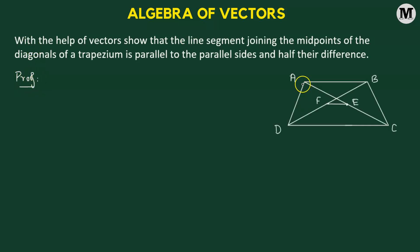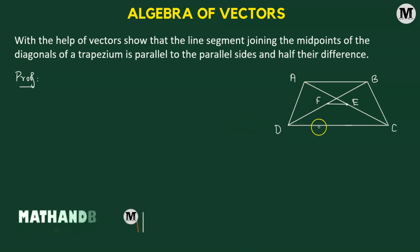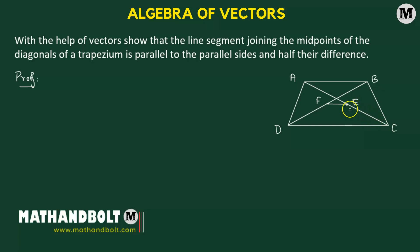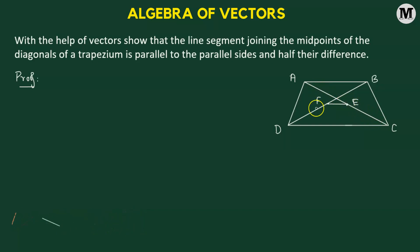We have a trapezium with vertices A, B, C, and D, where AB is parallel to side CD. So they are the two opposite parallel sides. E and F are the midpoints of the diagonals AC and BD, respectively, of the trapezium.